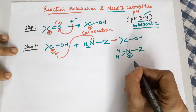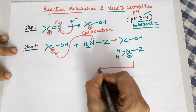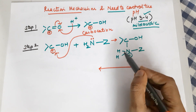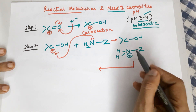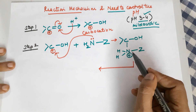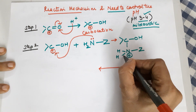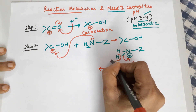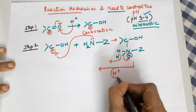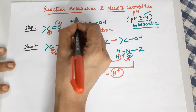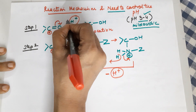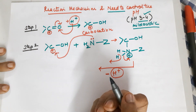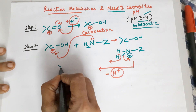In step 3, nitrogen being electronegative will never be stable with a positive charge. To stabilize itself, it loses a proton by accepting the bonding electron pair towards itself, causing H+ to be lost. So the third step is loss of a proton. You will notice the first step was gain of a proton and the third step is loss of a proton — meaning the proton is just the catalyst.